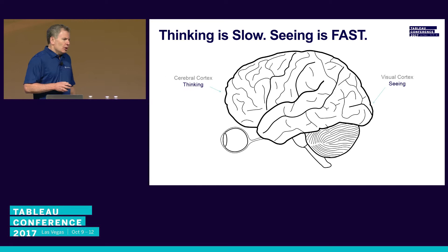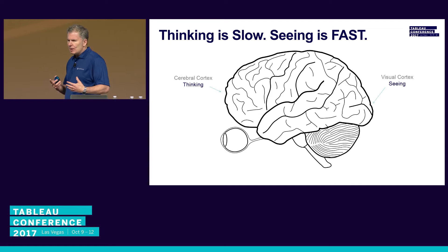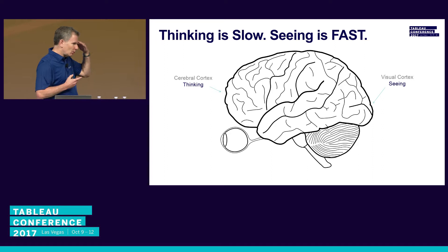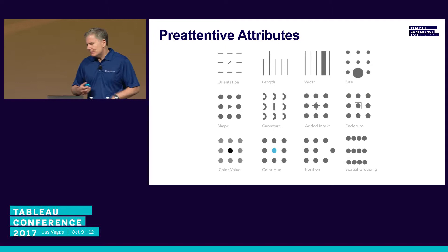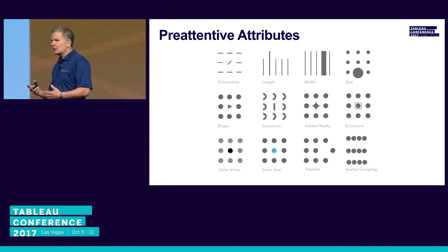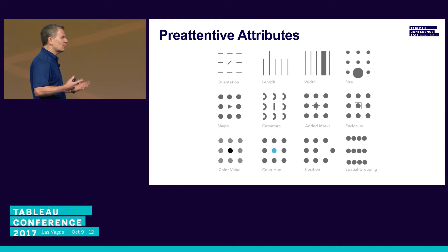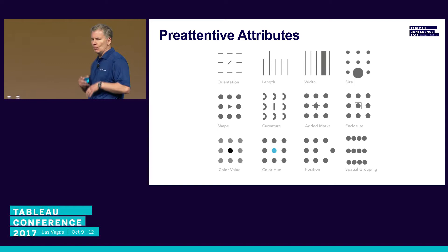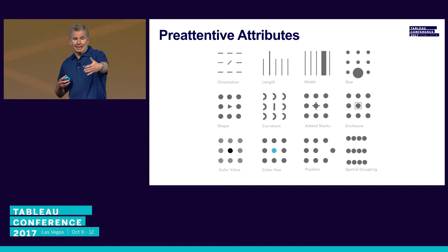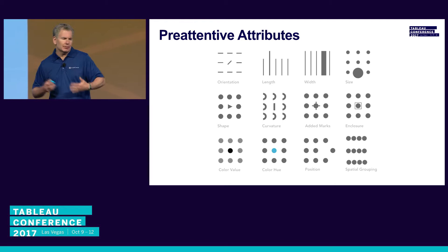What we want to try to do — and what Tableau does for you natively if you let it do its job — is force the people looking at your content to use the visual cortex of the brain. That's where they're just seeing things and it pops out. There are times when you need to use your cerebral cortex for deeper thinking. But remember, especially if you're building content for executives, they want to see things fast. They don't want to have to grind through numbers. So what are some of the things that make visualizations stand out? Scientists call these pre-attentive attributes.